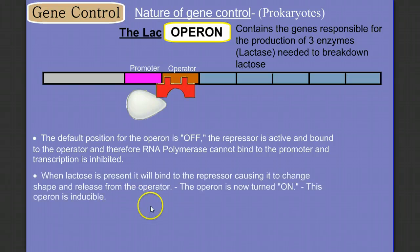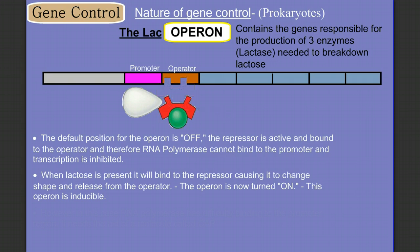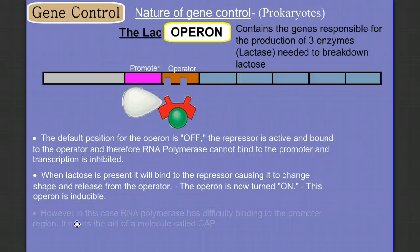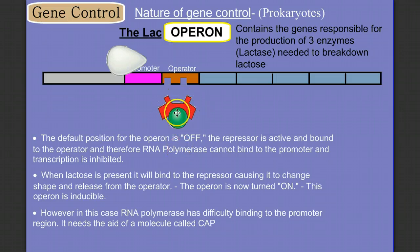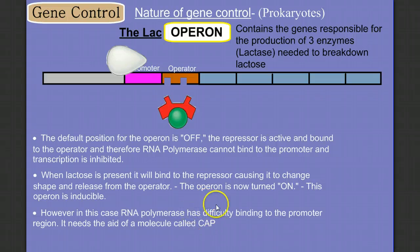When lactose is present, it will bind to the repressor, causing it to change shape and release from the operator, switching the system on — which makes sense, since we don't need to make lactase unless we have lactose. But there's a problem: RNA polymerase has a really hard time binding this promoter. It needs the help of a molecule called CAP. So even though lactose is present and we've removed the repressor from the operator, we still can't activate this operon without the help of CAP, which helps RNA polymerase bind to the promoter.